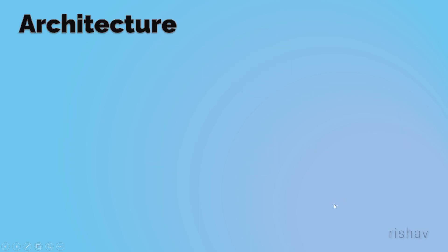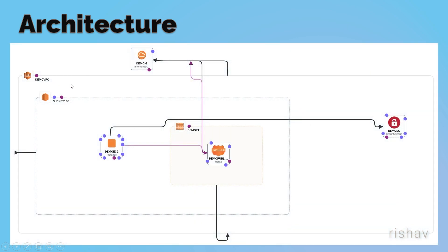Now let's see the architecture of this whole setup. At the top level we have a VPC, and inside that we have a subnet which is basically pointing to the VPC.